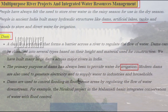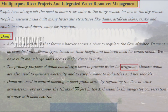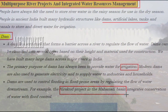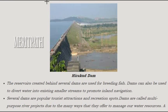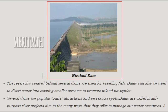Dams are used to control flooding in flood-prone areas by regulating the flow of water downstream. For example, the Hirakud project in the Mahanadi basin integrates conservation of water with flood control. The reservoirs created behind dams are used for breeding fish. Dams can also be used to divert water into existing smaller streams to promote inland navigation. Several dams are popular tourist attractions and recreation spots.